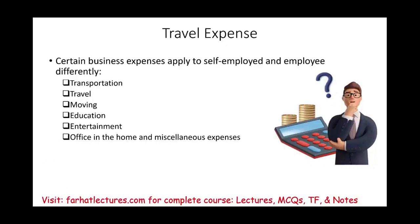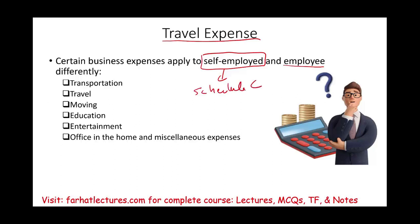Welcome to the session where we discuss travel expenses. We need to differentiate travel expense for a self-employed individual versus an employee. When you are self-employed and incur travel expenses, this deduction goes on Schedule C and it's deducted for AGI. If you are an employee, your deduction goes on Schedule A and it's a deduction from AGI.